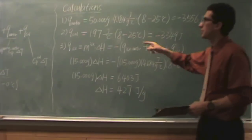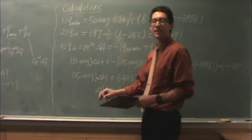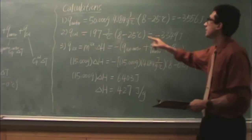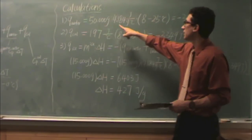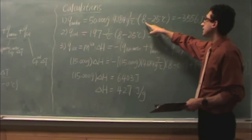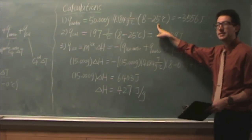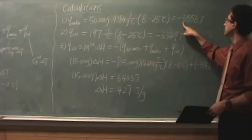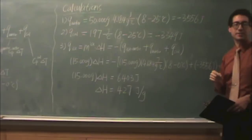You really just need all the Q's to be able to put them together. So, let's try that. The Q of water, which we see in the previous part, that's the MCsp delta T. Here's the mass of the water originally. Cp, that's a constant. We've seen that before. And then, the final temperature is eight, and it started, in our case, at 25 degrees C. So, we get minus 3556 joules.